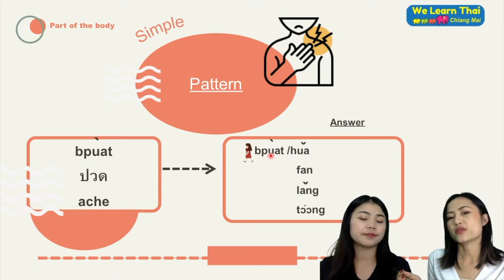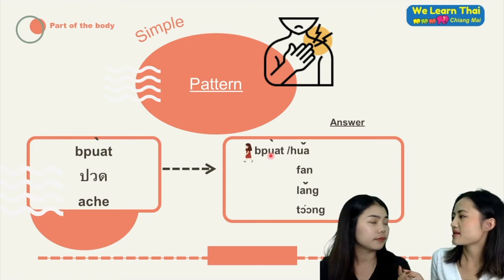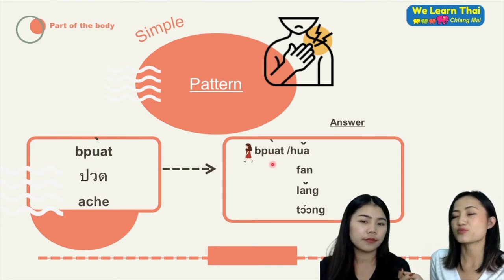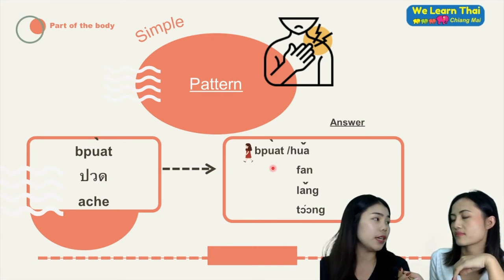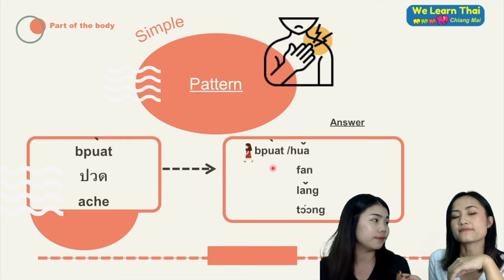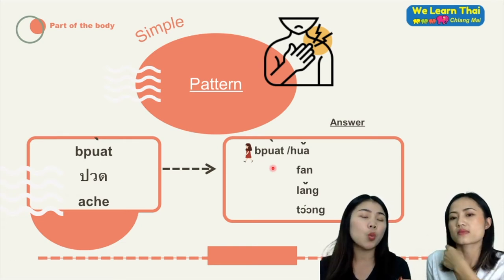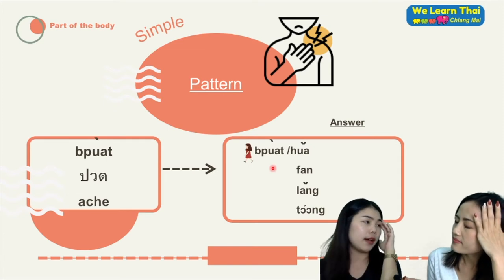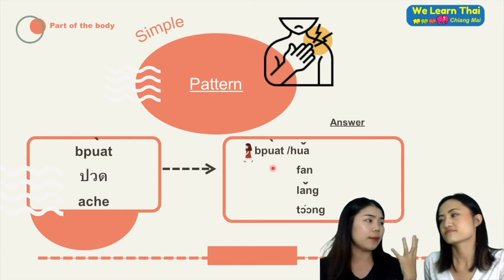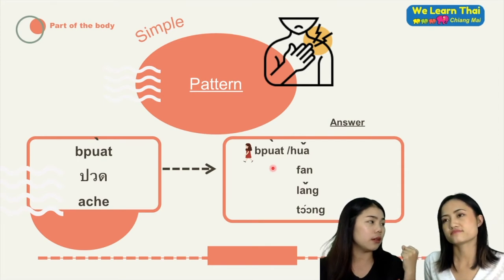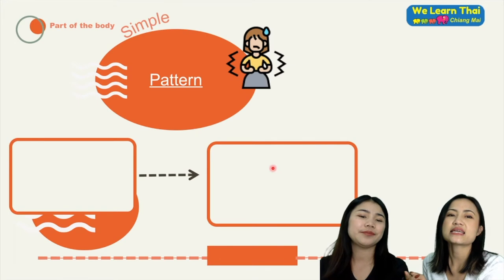We will use the word ปวด when the symptom you cannot see, or it's about the muscle. Like ปวดหัว is about inside or about the muscle, and ปวดหลัง is about the muscle in your back.